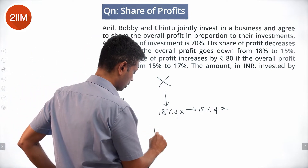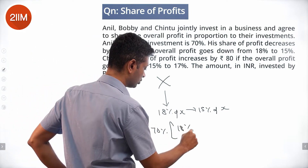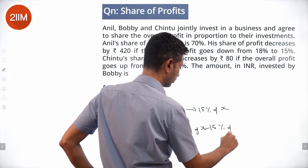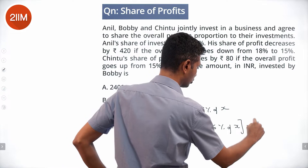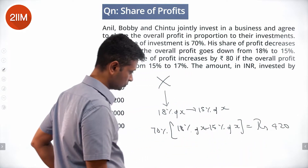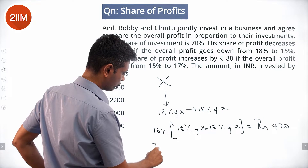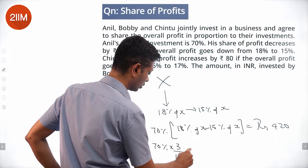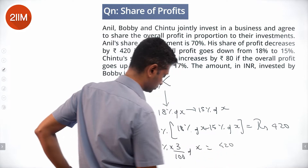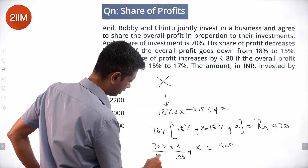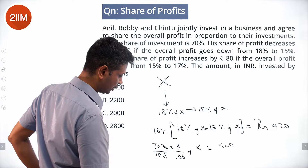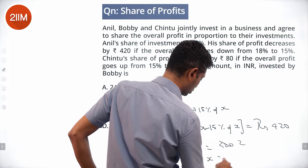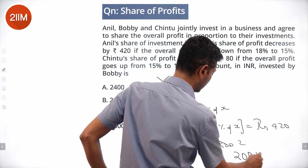Anil's share: 70% of (18% of x minus 15% of x) equals ₹420. This is 3% of x, so 70% of 3% of x equals 420. That gives us 70/100 × 3% × x = 420. Taking 70 × 3 = 210, this simplifies to 2.1% of x = 420, so x equals 20,000.